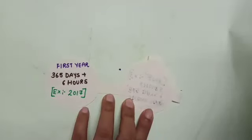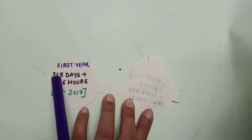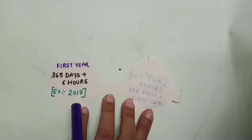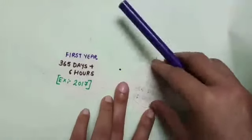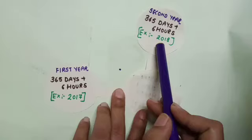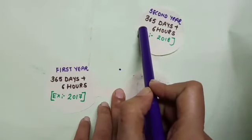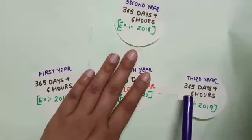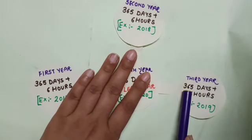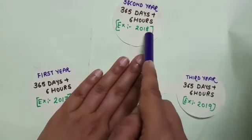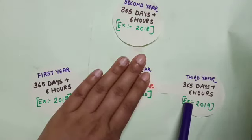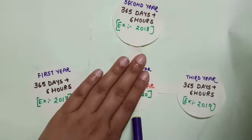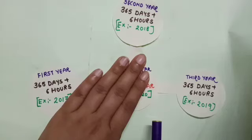In the year 2017, the year had 365 days plus 6 hours. In 2018, a year again had 365 days plus 6 hours. In 2019, it again had 365 days plus 6 hours. So 6 plus 6 plus 6 equals 18 hours. Subtracting 24 by 18, 6 hours are remaining. This 6 hours carries over to the next year.